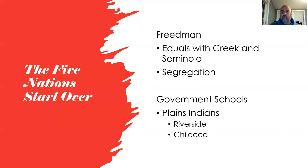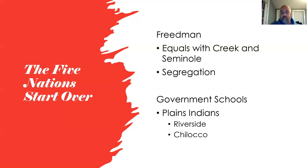To some extent, all other tribes in Indian territory did practice segregation, much like some southern states after the Civil War, which continued into the 1950s and 60s. There was development of some all-black settlements that provided safety and freedom. Segregation became a part of not only American history but Oklahoma history. For plains Indians, you begin to see the development of government-run schools.